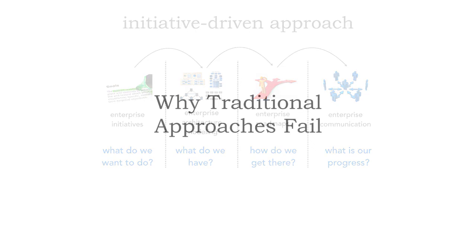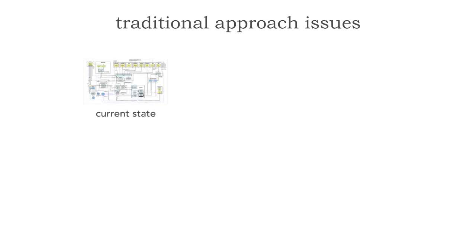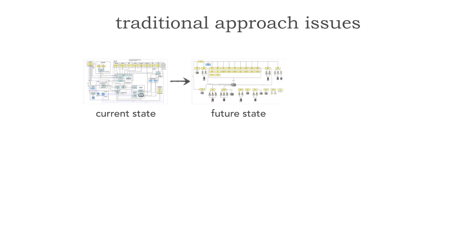Both of these traditional approaches fail in today's world. These two traditional approaches, which are still currently used, is one of the reasons why enterprise architecture is so hard. We have a current state of what the enterprise looks like, and then what we want to do is get to some sort of future state based on a particular business initiative. And we develop some sort of roadmap or migration plan of how to get there.